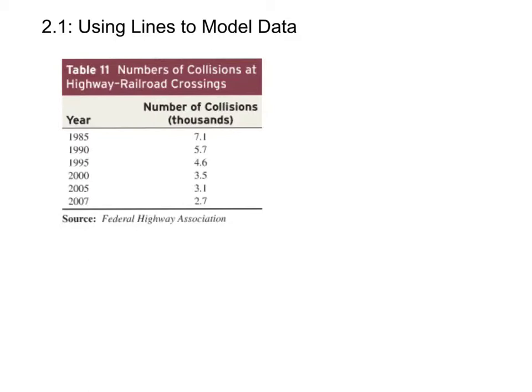Now, we're going to graph this data in a minute, but first we have to define our variables. Let's start with the independent variable, T, for time. And T is going to represent the number of years since 1980. And the dependent variable is going to be N. And that's going to stand for the number of collisions measured in thousands.